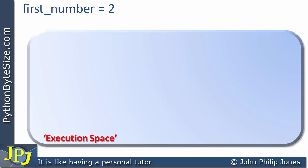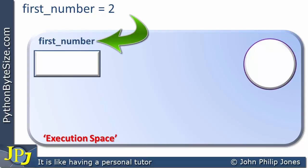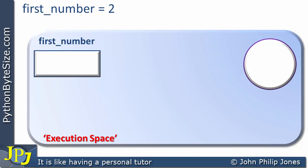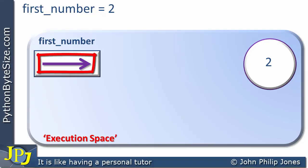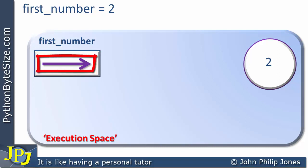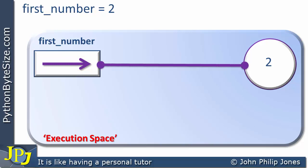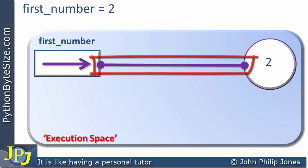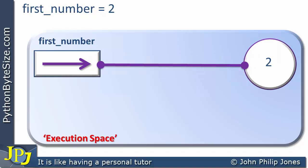We can represent that in the following animation: we have first_number and underneath it a rectangular shape, and we also have a circular shape representing the object. The 2 gets copied to the object, and an arrow appears at first_number — this arrow suggests it holds the address, the location, the reference to the object. So we end up with first_number and 2 being bound together: first_number is the name that's bound to the integer object with the value 2.